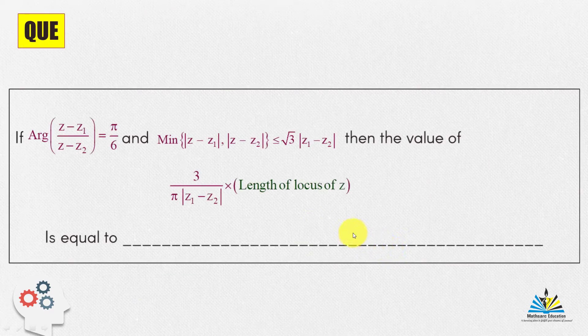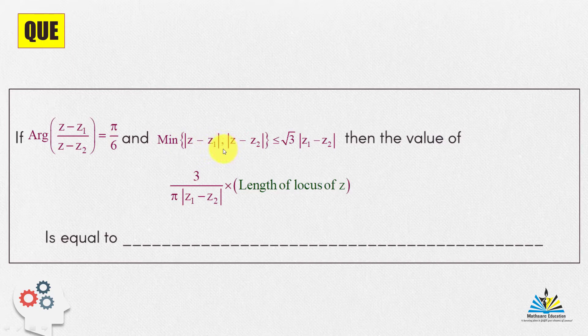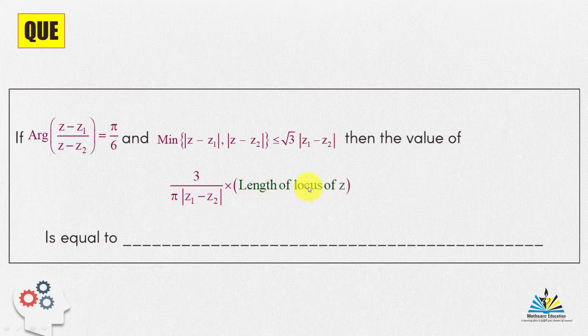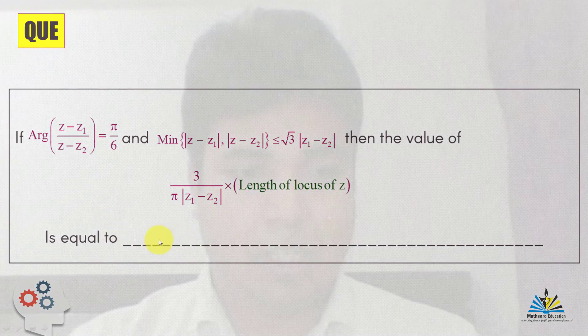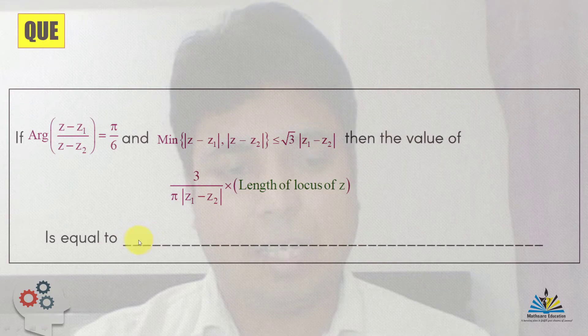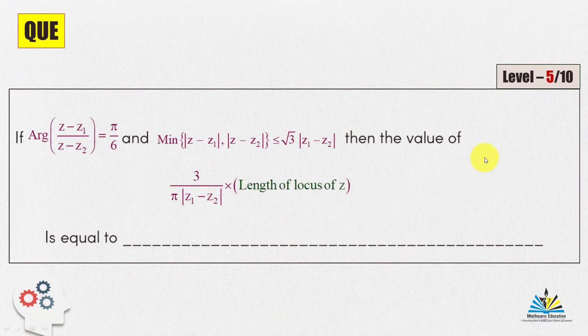Here is the question. If the argument of (Z minus Z1) upon (Z minus Z2) is π/6, and the minimum of mod(Z minus Z1) and mod(Z minus Z2) is less than or equal to √3 · mod(Z1 minus Z2), then find the value of (3/π) · mod(Z1 minus Z2) · (length of locus of Z). The difficulty level is 5 out of 10 and the answer is 4 — you may try solving it yourself first.